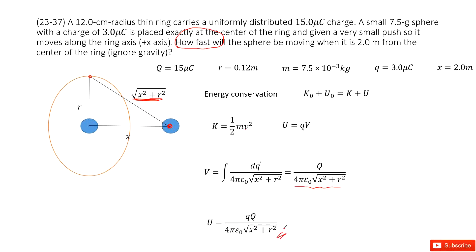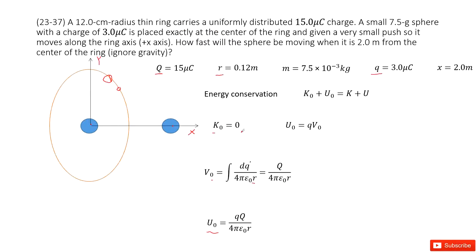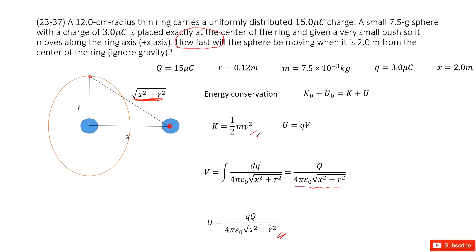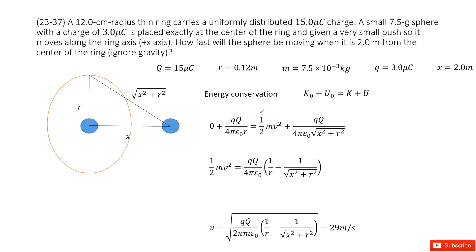Now we have the initial kinetic energy, initial potential energy, final kinetic energy, and final potential energy. Applying energy conservation, we input them into the equation, rearrange to get the expression for velocity v, substitute all the known quantities, and get the answer.